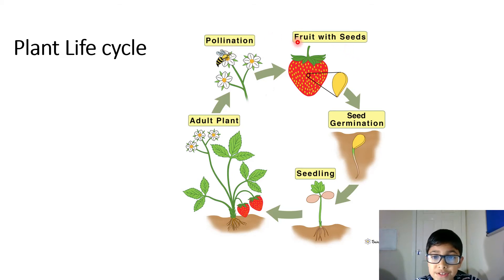The first step is fruit with seeds. There is a strawberry. It can be apples, tomatoes, oranges. Could be a cucumber.